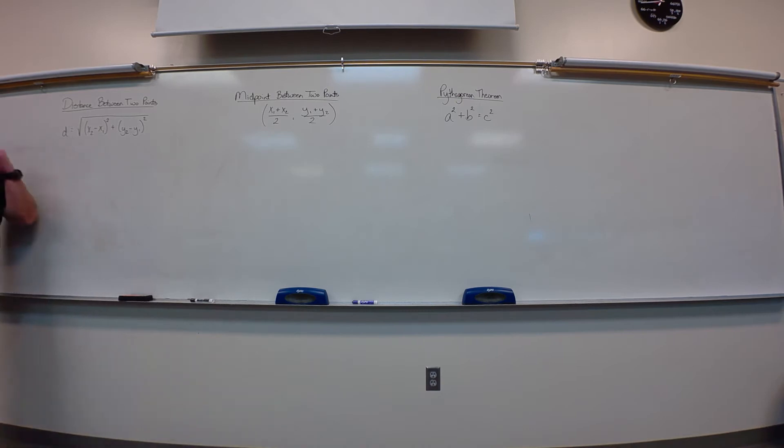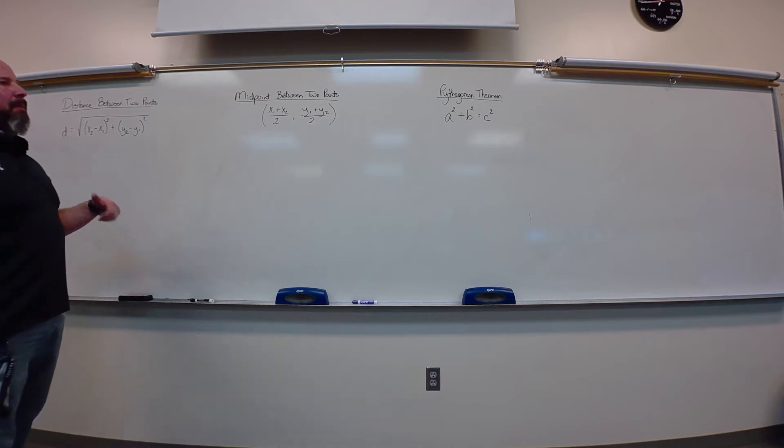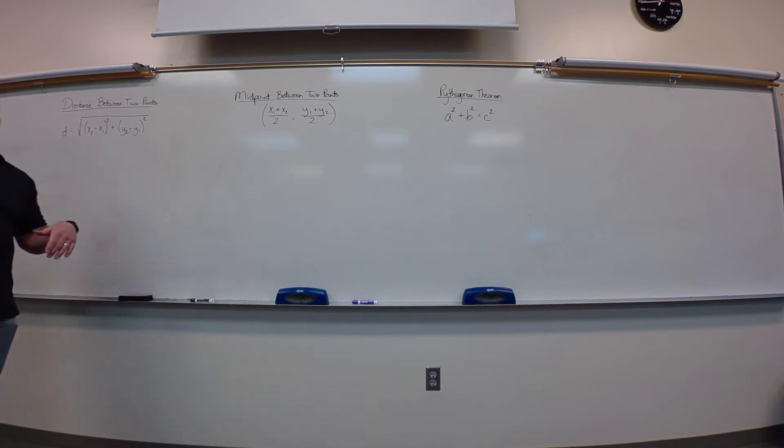All right, three different formulas: distance between two points, midpoint between two points, and Pythagorean theorem. All of these could typically end up, especially distance and Pythagorean theorem, with a square root, and that's kind of what we've been working with.